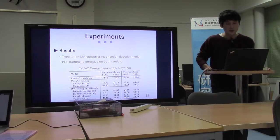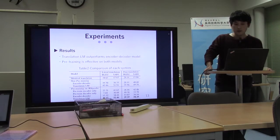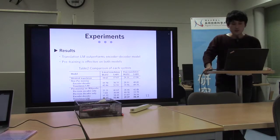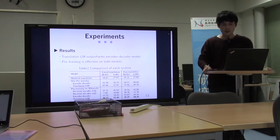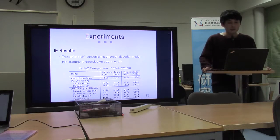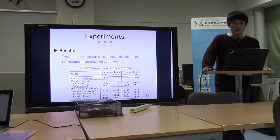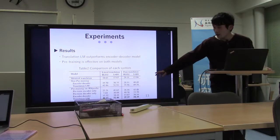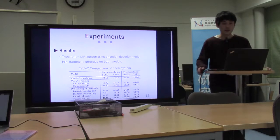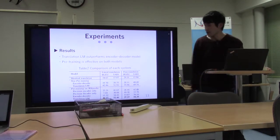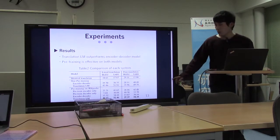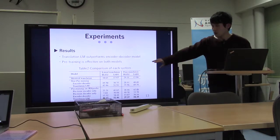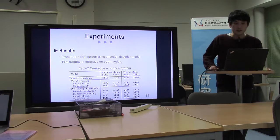Table 2 shows the comparison of each system. Identical translation denotes the system that outputs the original sentence without change. The results show the translation language model outperforms the transformer-based encoder-decoder model in both literal translation and free translation. Also, using pre-training, both models improved in both simplification tasks. This shows pre-training is effective.